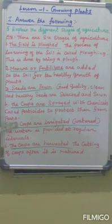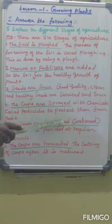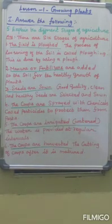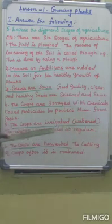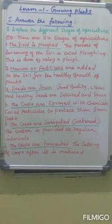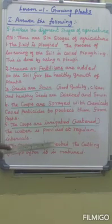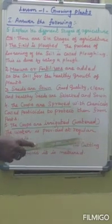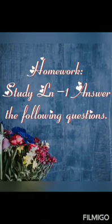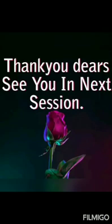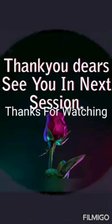Fifth one: the crops are irrigated. Water is provided at regular intervals. Sixth one: the crops are harvested — the cutting of crops after they are matured. This session, I completed lesson one successfully. During the next session, I will meet you with an interesting lesson. Thank you.